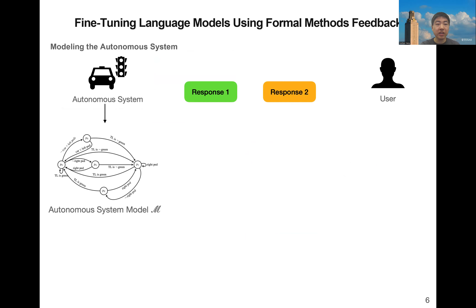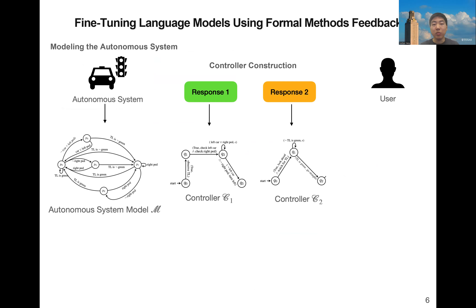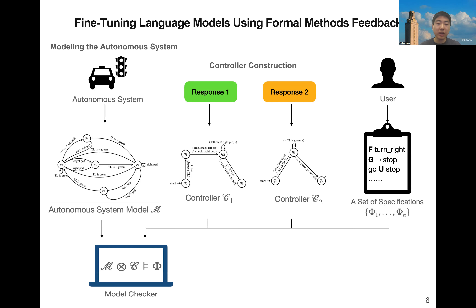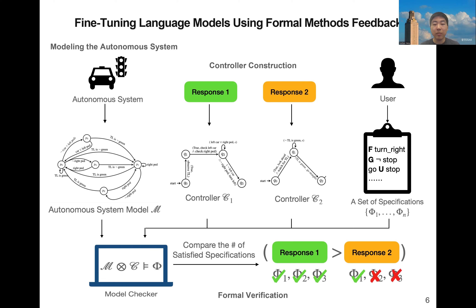More specifically, we get a system model from the system designer, and then we transform the textual response from the language model into an automaton-based controller. The user provides a set of temporal logic specifications. In this way, we use a model checker to see how many specifications each controller, when implemented in the model, satisfies. The response that satisfies more specifications is the preferred response.